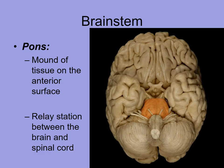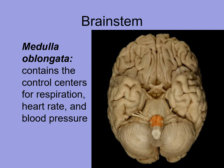The pons looks like a mound of tissue on the anterior surface. It is a relay station sending information from the spinal cord to the brain and back — so information coming from the spinal cord has to pass through the pons on its way toward the brain.